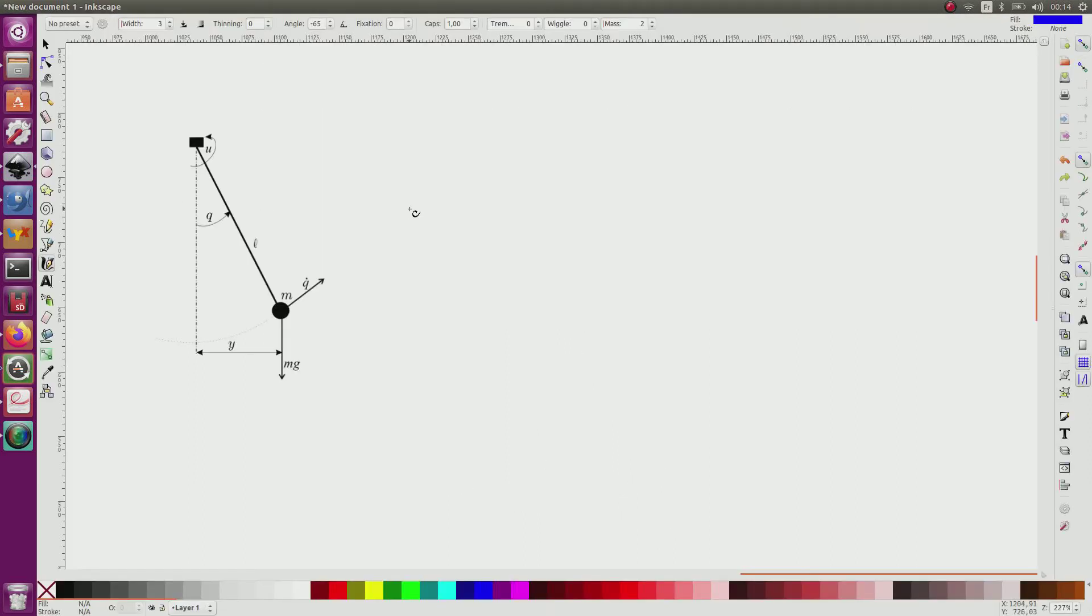This is my pendulum and we can see that there is one degree of freedom which is Q. As a consequence, the state could be the degree of freedom and its derivative, Q dot.